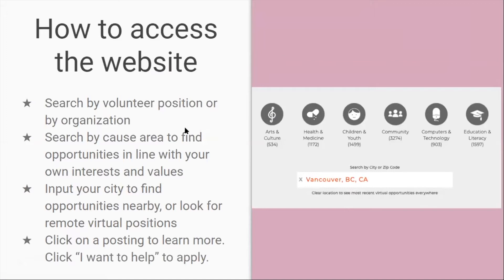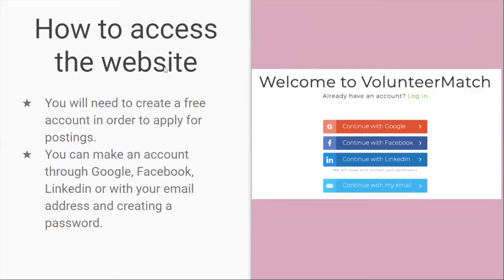You can search by volunteer position or by organization, and search by cause area to find opportunities in line with your own interests and values. Input your city to find opportunities nearby, or look for remote virtual positions. If you are interested, just click 'I Want to Help' to apply for that position. You will need to create a free account to apply. Once you click 'I Want to Help,' a login page will load and you can make an account through Google, Facebook, LinkedIn, or with your email address and a password.